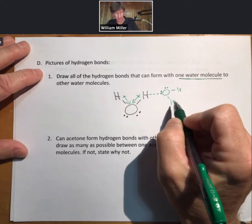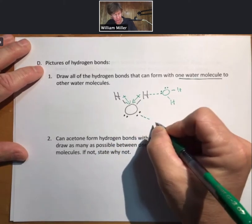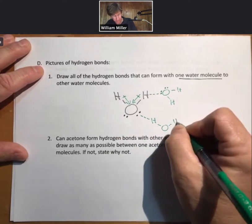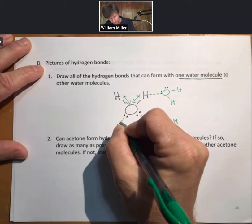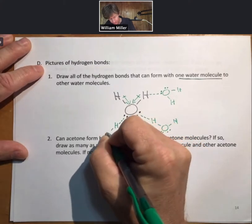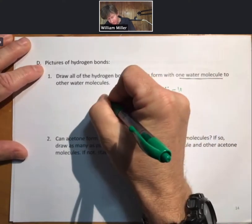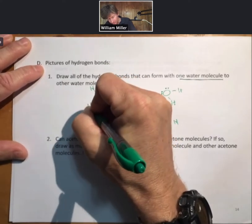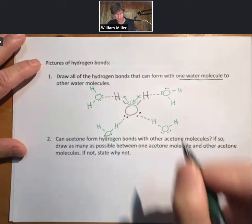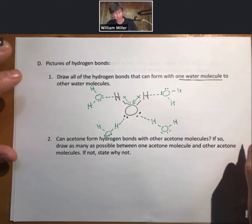And each oxygen will hydrogen bond with an H on a neighboring molecule. So I'll draw the other two in here. There, there. So each water molecule can form a max of four hydrogen bonds.